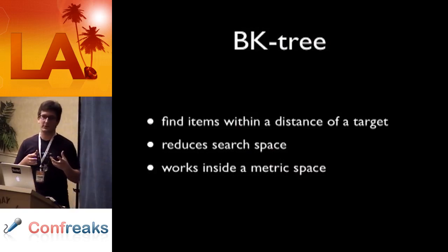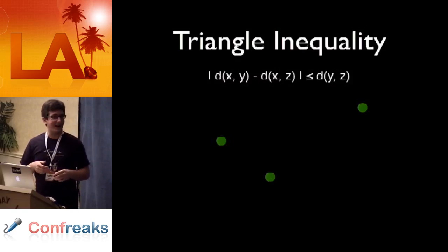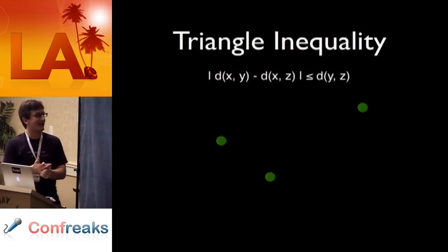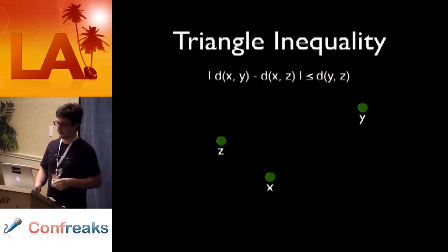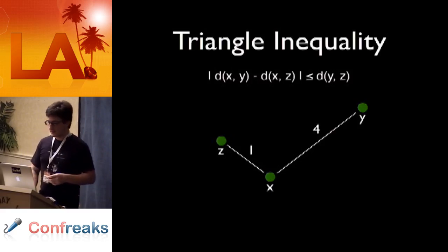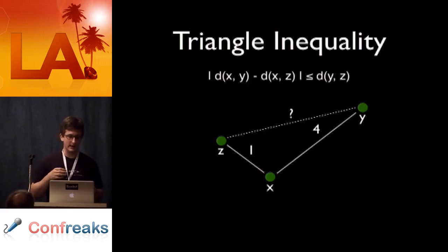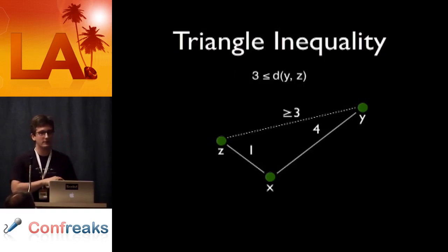Traditionally, BK trees are used for spelling correctors in order to find the best matches for a particular word in a large dictionary. What this works off of is something called the triangle inequality. Let's say we have these three nodes, X, Y, and Z. And we know the distance between two of the nodes, one and four. And technically, this is the reverse triangle inequality, but the point really is that using that, we can determine a lower bound for the distance between Z and Y. So we just plug in the numbers into our formula, four minus one. And so we can say that the distance between Z and Y is greater than or equal to three. If all we cared about was if the distance between them was less than two, now we don't even need to run that distance function. Now we can just skip it.